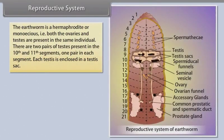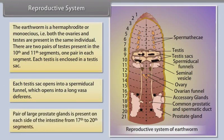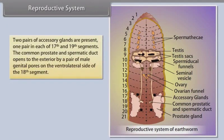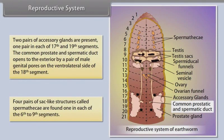Reproductive System. The earthworm is a hermaphrodite or monoecious, that is, both the ovaries and testes are present in the same individual. There are two pairs of testes present in the tenth and eleventh segments, one pair in each segment. Each testis is enclosed in a testis sac. Each testis sac opens into a spermiducal funnel, which opens into a long vas deferens. A pair of large prostate glands is present on each side of the intestine from the 17th to 20th segments. Two pairs of accessory glands are present, one pair each in the 17th and 19th segments. The common prostate and spermatic duct opens to the exterior by a pair of male genital pores on the ventrolateral side of the 18th segment. Four pairs of sac-like structures called spermathecae are found, one in each of the 6th to 9th segments.